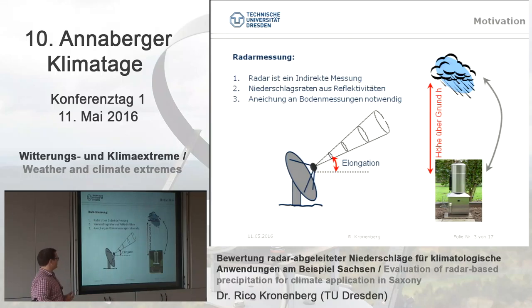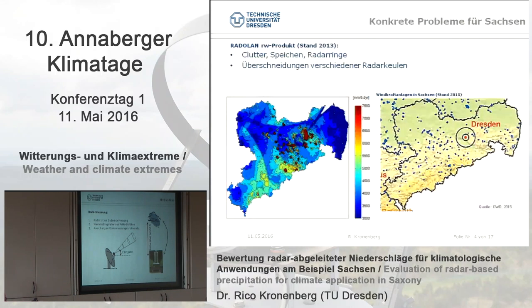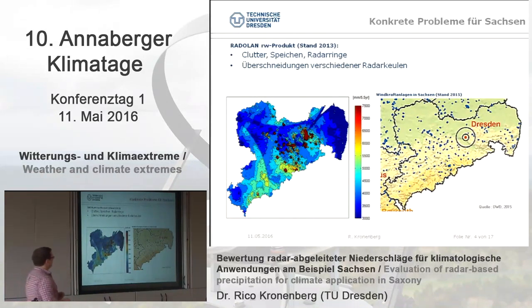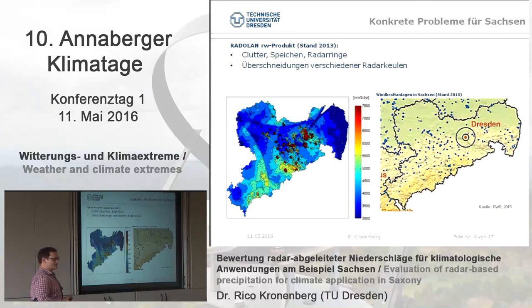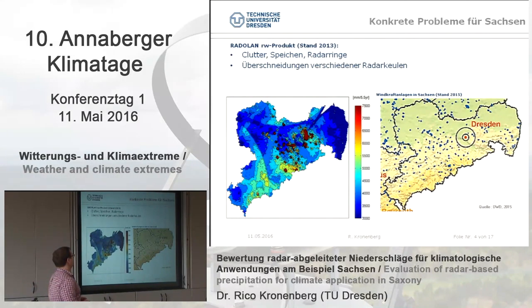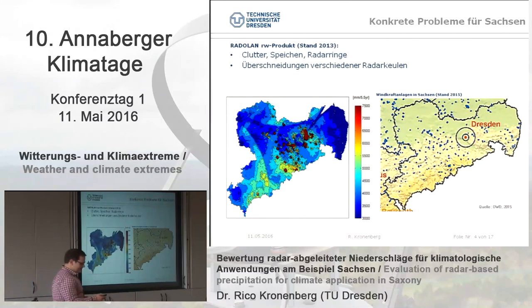This is the big advantage of the information about the precipitation field in spatial and temporal relation. In Saxony, we use the RADOLAN products that are freely accessible, the rain gauge values, and also the daily data of the Hellmann measurement.